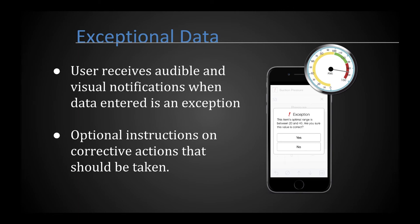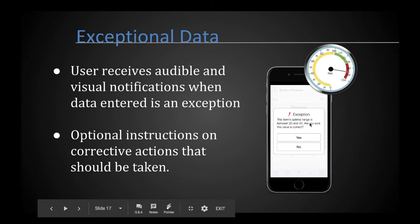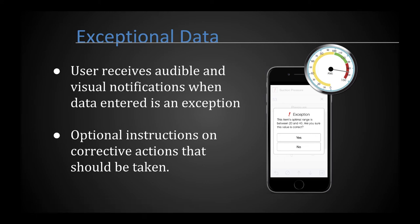When operators input data on the mobile device and the data is considered an exception, they receive an audible alert and a visual warning dialogue they must confirm. It tells them the value entered is an exception and shows how far outside the normal range it is, giving them guidance on what corrective actions to take. Additional instructions can be read on screen so they can take those follow-up actions immediately.